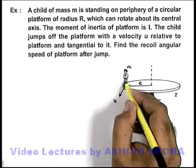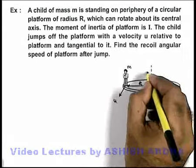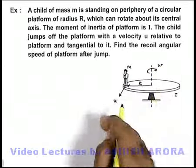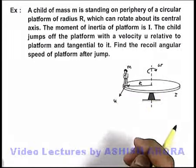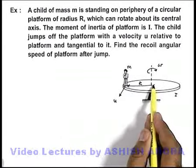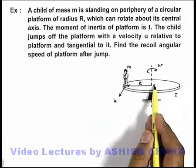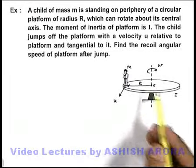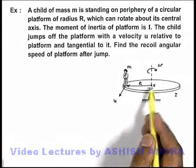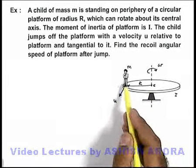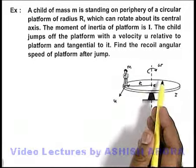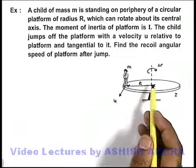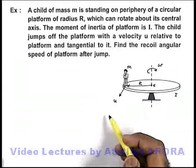When the boy jumps off, the platform will rotate in the opposite direction with an angular speed omega to conserve its angular momentum. About the center of this platform, there is no external torque other than the force exerted by the hinge, which produces zero torque. The total angular momentum of the system should remain conserved.